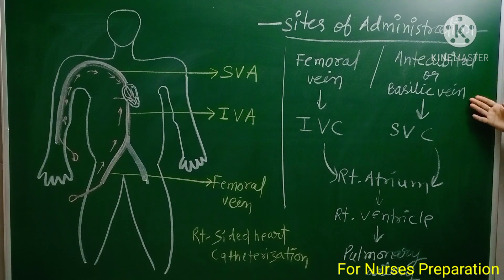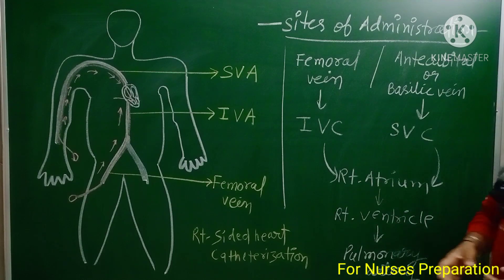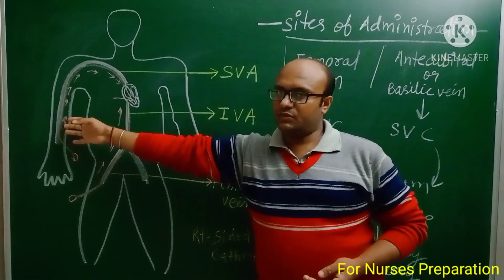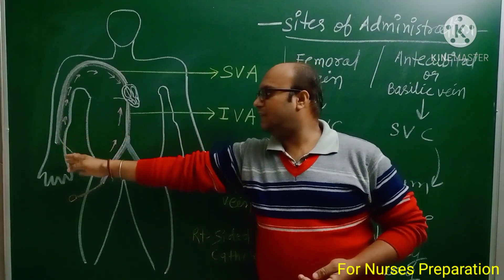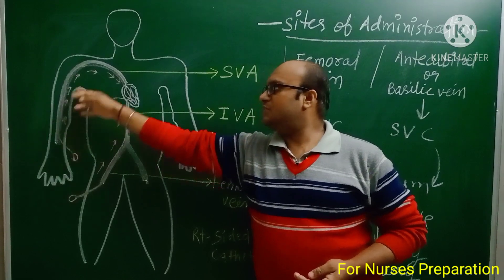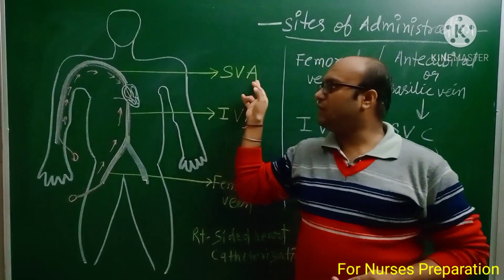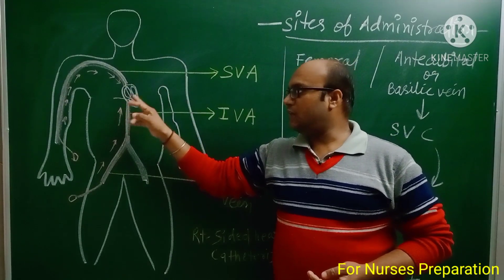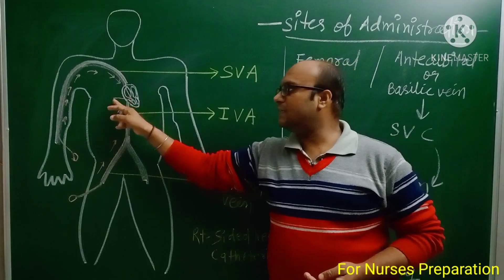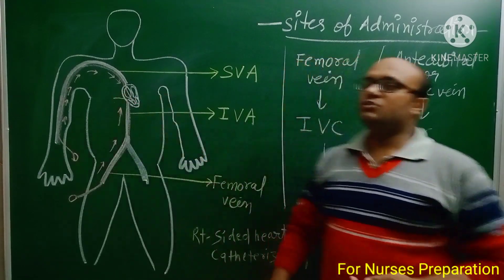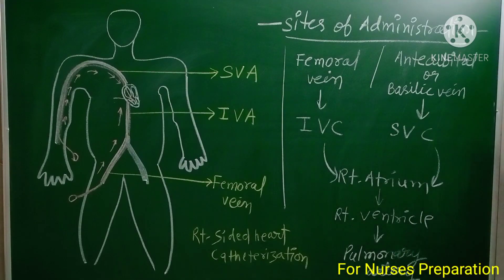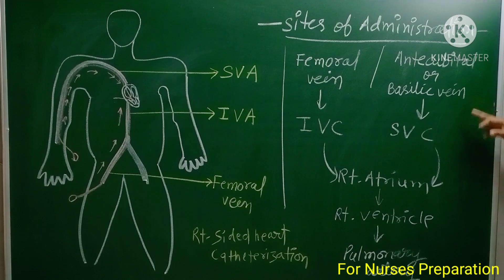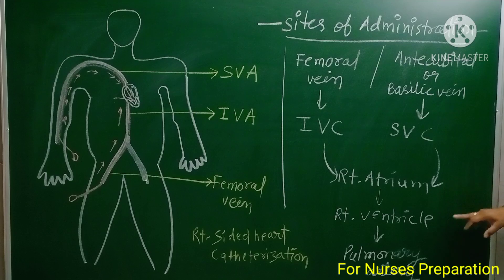The second site is the antecubital or basilic vein, located in the hand or arm region. When the catheter is inserted at this site, it reaches the superior vena cava, then the right atrium of the heart, then the right ventricle, and finally the pulmonary arteries.